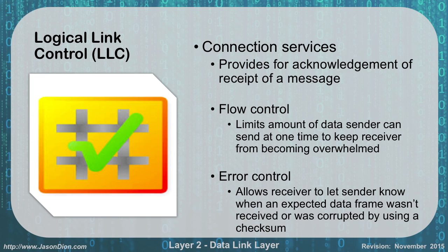Layer 2 is the first place you're going to see flow control, though it exists at several layers. We also have error control, which we'll first see at Layer 2. This allows the receiver to tell us that it didn't get the frame it was expecting or that it was corrupted. When we talk about a checksum, it takes the data it receives, runs an algorithm, and determines whether it was good or bad. If it's bad, it asks for a resubmission; if it's good, it moves forward. That's our first layer of error control.